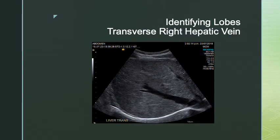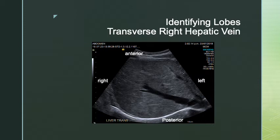Here we have a transverse image at the level of the right hepatic vein. With image orientation of right, left, anterior, posterior — for the right lobe we have anterior and posterior segments. My right hepatic vein is what divides anterior from posterior. So I have segment seven, which is posterior and superior, and segment eight, which is anterior and superior.